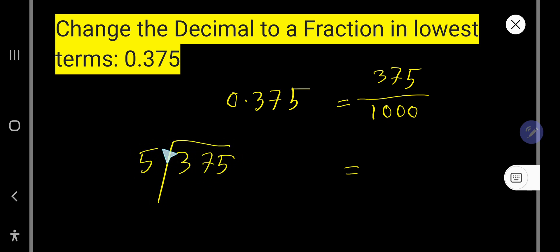5 goes into 7 one time... 7 times 5 is 35. If you subtract you get 2, now bring down this 5. So 5 goes into 25 five times, that is 25. So if you divide this 375 by 5, you will get 75.